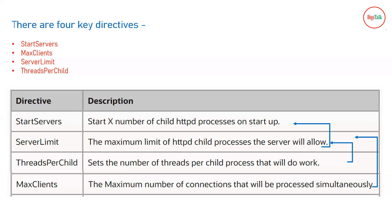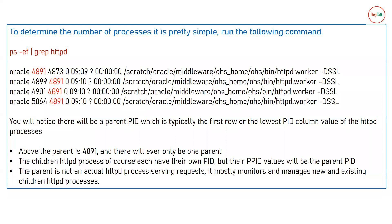MaxClients is the maximum number of connections processed simultaneously. If someone asks what is the capacity of your OHS web server — how many requests it can accept simultaneously — you simply look at the MaxClients value. However, the MaxClients count depends on ServerLimit and ThreadsPerChild. To check child processes, you can run 'ps -e' and grep for 'httpd' — httpd is the main child process and other child threads are generated inside it.